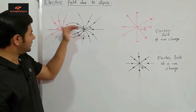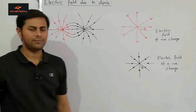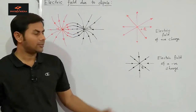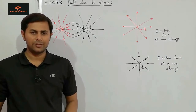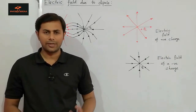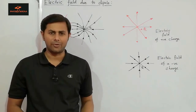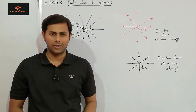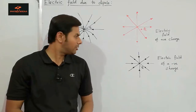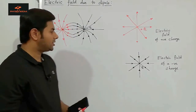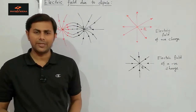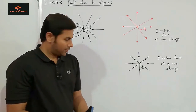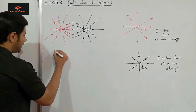So this is how the electric field looks for a positive charge kept at some distance away from a negative charge. Now let us define a quantity which will be important for further discussion — the electric dipole moment.